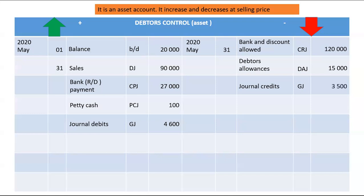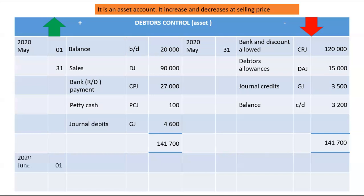Find the bigger side. The bigger side, according to my calculations, will be the debit side at 141,700. Take 141,700 minus everything on the credit side: minus 120,000, minus 15,000, minus 3,000. You will get the balance carried down of 3,200, which will ultimately be your balance brought down in the next month at the beginning of next month — 3,200.